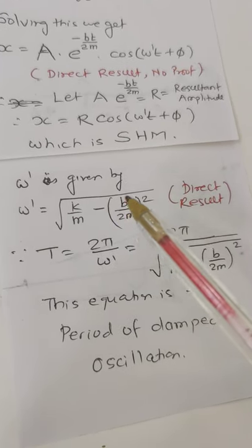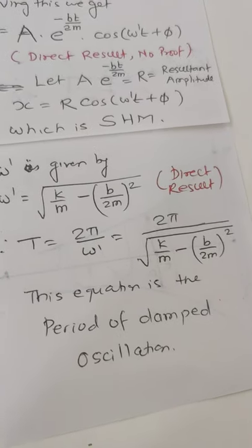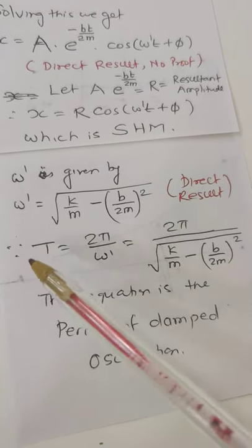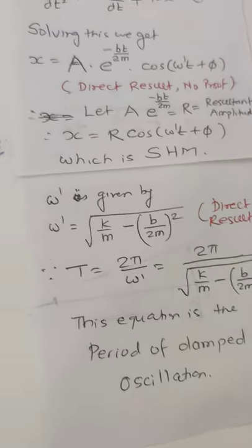√(k/m) - (b/2m)². This is b/2m and (b/2m)² whole square, this is the link. So, this is direct result: T = 2π/ω', ω' is here, this is all. OK?